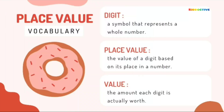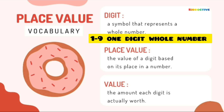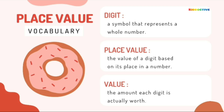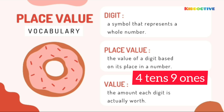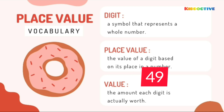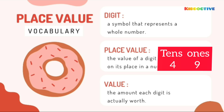Now we are going to discuss what is place value. A digit from 1 to 9, we call it a 1-digit number, meaning a whole number. Place value means the value of a digit based on its place in a number. Like the previous question — 4 tens, 9 ones — the number is 49. So there are two digits, 4 and 9. 4 is placed in the 10's place and 9 is placed in the 1's place.